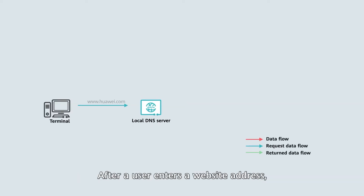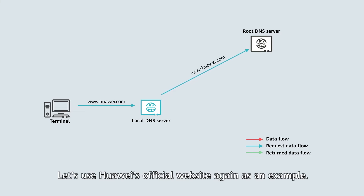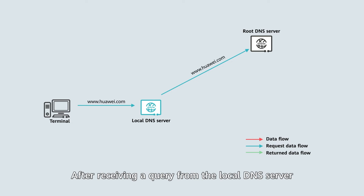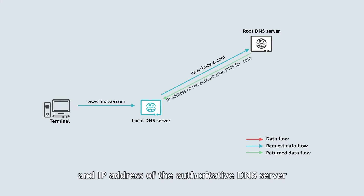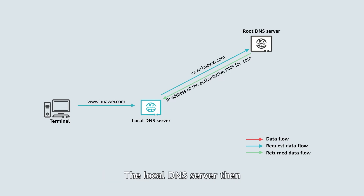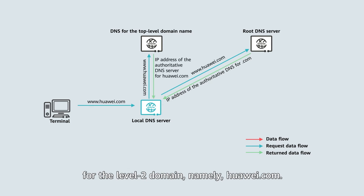After a user enters a website address, the local DNS server first queries the root DNS server for the top-level domain name. Let's use Huawei's official website again as an example. After receiving a query from the local DNS server, the root DNS server returns the name and IP address of the authoritative DNS server for the top-level domain, namely .com. The local DNS server then queries this server, which returns the name and IP address for the level 2 domain, namely huawei.com.